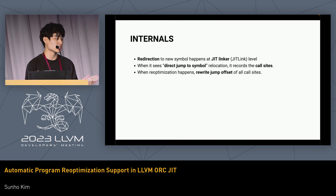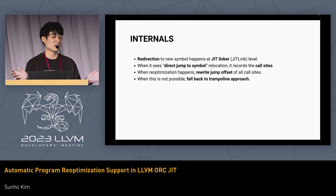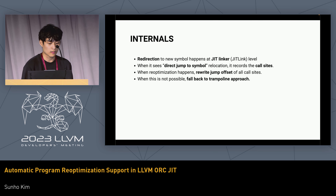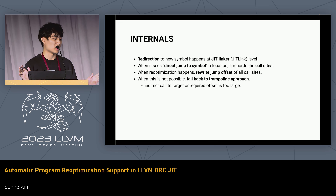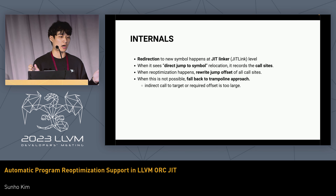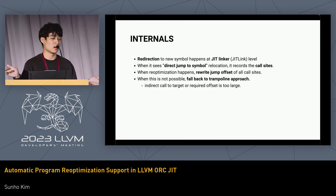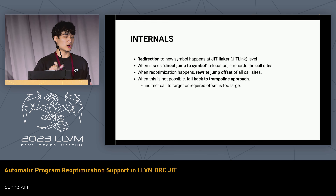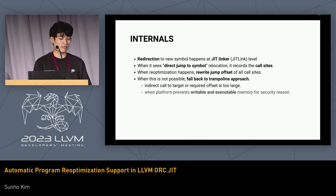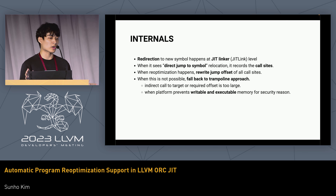When direct rewriting is not possible, we fall back to the trampoline approach where we update a function pointer. Examples of when this is not possible include: indirectly calling the target where we can't modify the instruction, or when the required offset is too large to fit into 32 bits. Also, when the platform prevents writable-and-executable memory, there is a workaround, but by default we fall back to the trampoline approach.